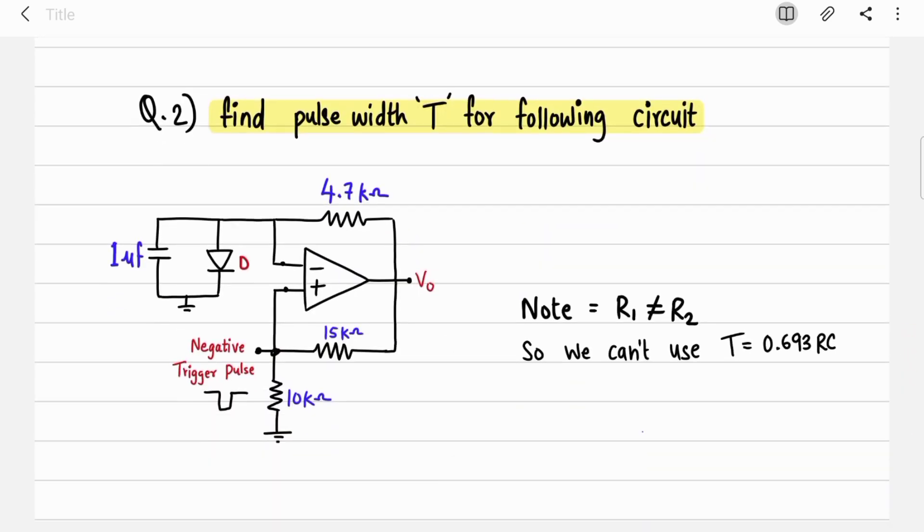Now let's solve the second question: find pulse width T for the following circuit. They have given a circuit diagram with all the values, all the components, and now you have to find pulse width. Now you have to observe carefully - here R1 and R2 are not equal, so you cannot use the simplified equation that is 0.693 RC.